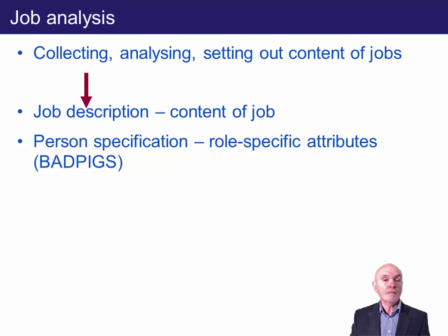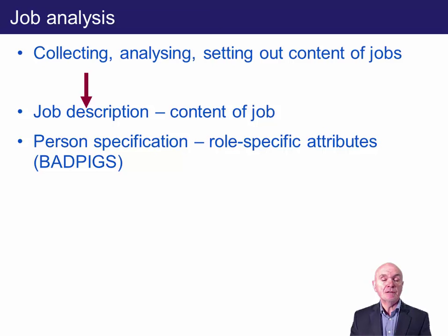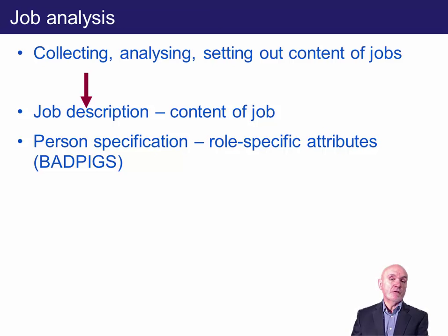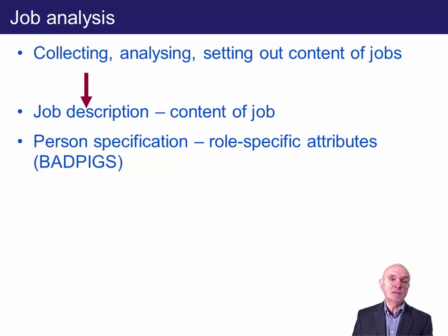Once we know the content of the job, we can decide what attributes a successful candidate would have — that's the person specification. The acronym BADPIGS is used to think about the various qualities. B is their background, which could be relevant in terms of where you live — for example, a doctor in a hospital might need to live within 15 kilometres to be on call. A is achievements — your qualifications and skills, maybe whether you have a driving licence.